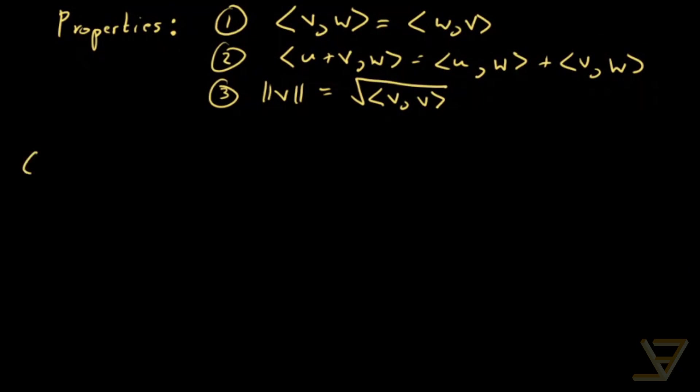Now, the first tool we need is the Cauchy-Schwarz inequality. We've proven this for real n-tuples in a different video, so you can check that out. In this language, it's equivalent to saying ||v|| · ||w|| ≥ |⟨v, w⟩|. You can verify that the ordinary Cauchy-Schwarz inequality tells you exactly this.